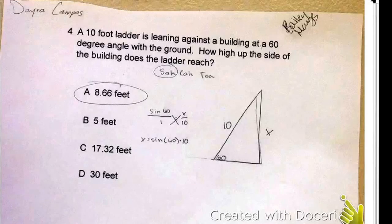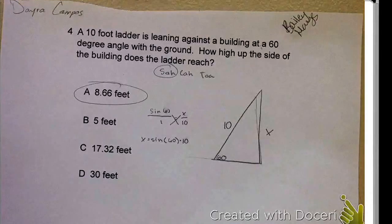And then you would cross multiply that, and then you put this in the calculator: sine parenthesis 60 times 10, and you get 8.66 feet.